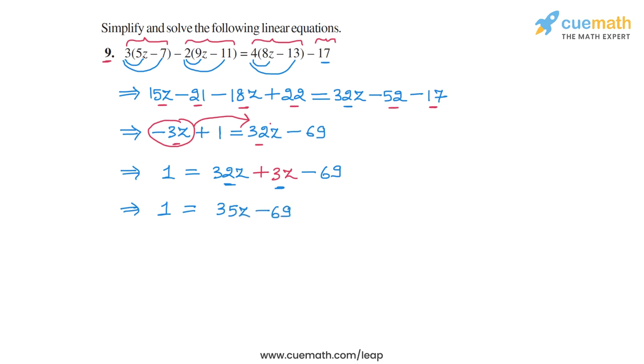And now we can take this minus 69, transpose it to the left side. So it will become plus 69, and we will get 1 plus 69 is equal to 35z. Or basically 35z is equal to 1 plus 69, which is equal to 70.